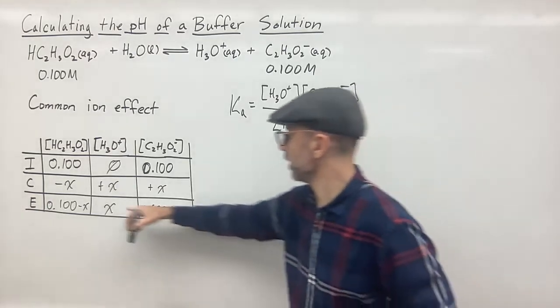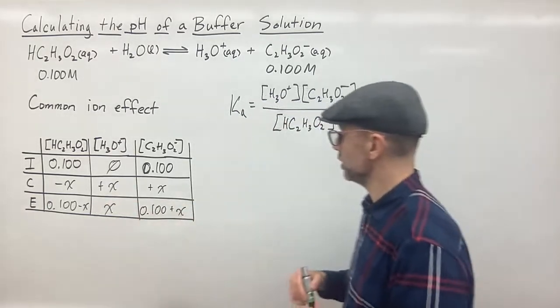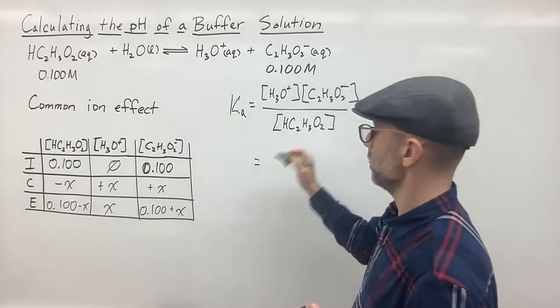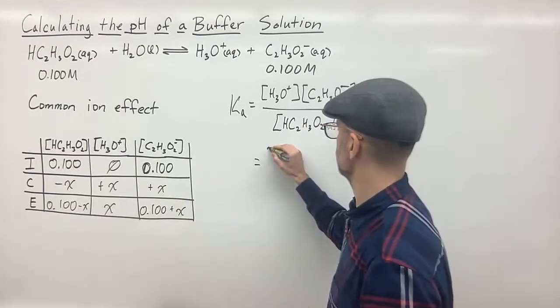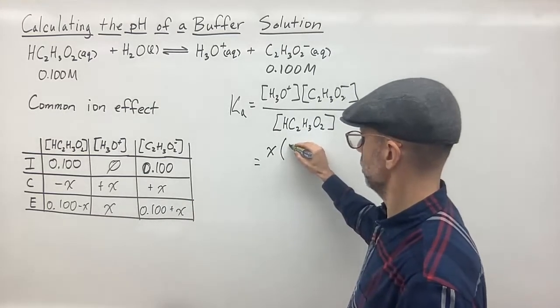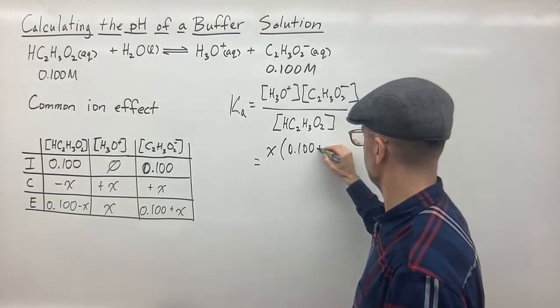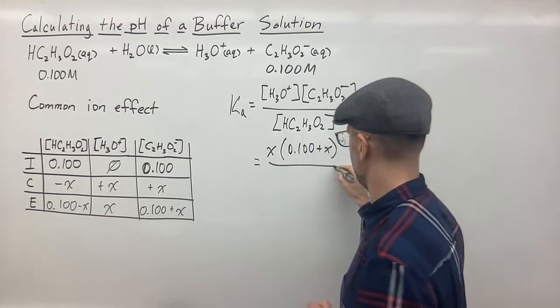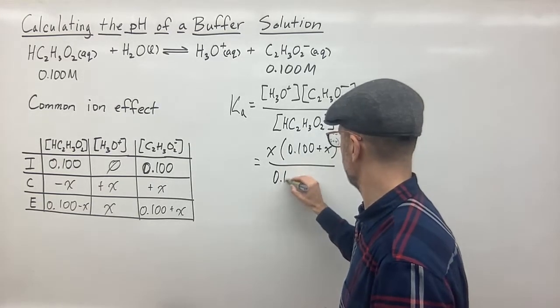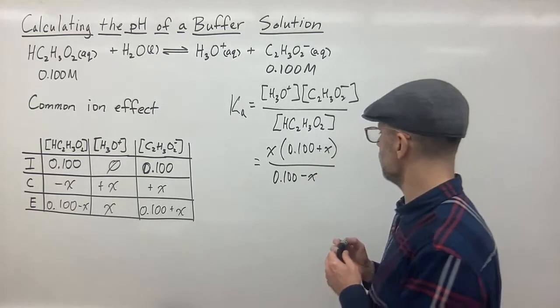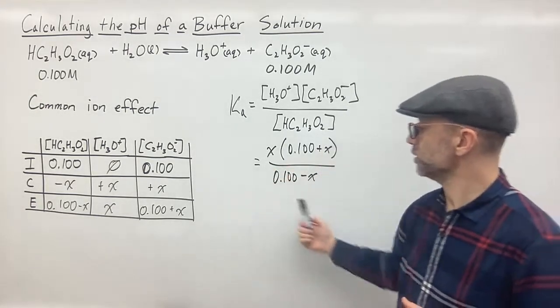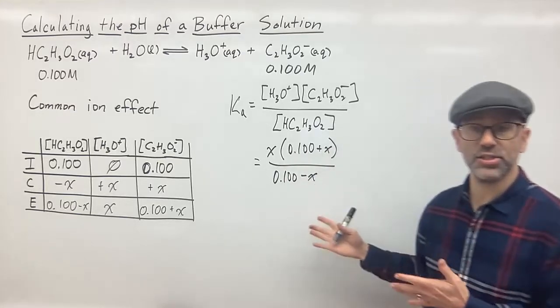So we plug in our equilibrium expressions for those concentrations. So this is going to be equal to, we have x here. So it's going to be x times 0.100 plus x. And then we have here 0.100 minus x. So here is our expression. And then we can solve for x.